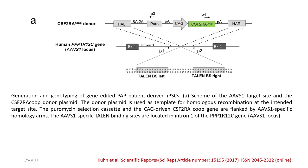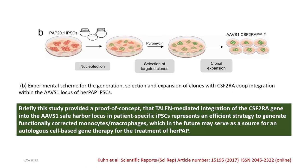Here is the schematic for the generation and genotyping of gene-edited patient-derived iPSCs. You can see the scheme of the AAVS1 target site and the CSF2RA TALEN donor plasmid; the donor plasmid is used as a template for homologous recombination at the intended target site. The puromycin selection cassette and the CAG-driven CSF2RA gene are flanked by AAVS1-specific homology arms, and the AAVS1-specific TALEN binding sites are located in intron 1 of the PPP1R12C gene. Panel B shows the experimental scheme for generation, selection and expansion of clones with CSF2RA integration within the AAVS1 locus of HAARPAP iPSCs.